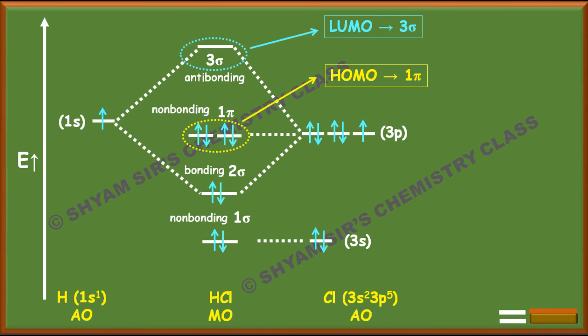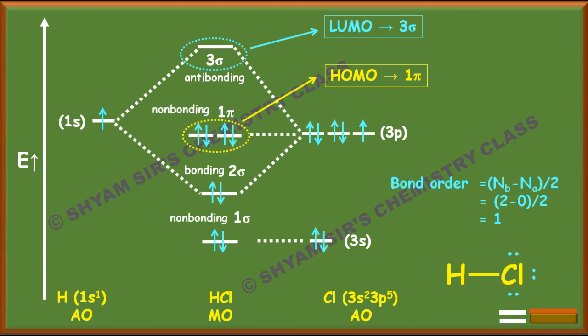The bond order for HCl is also (2 − 0) / 2 = 1, giving a single bond between H and Cl. There are three pairs of non-bonding electrons (lone pairs) surrounding the chlorine atom, so HCl can be written as H−Cl with three lone pairs — very similar to the structure of HF.